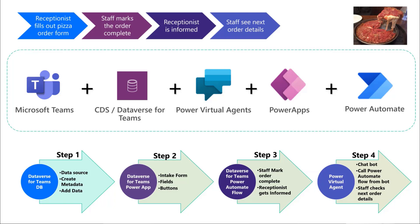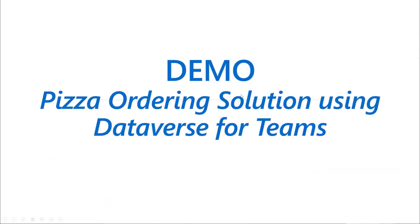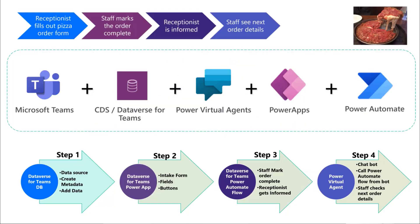Step three is making a Power Automate flow to mark an order as complete, so we can inform the receptionist who might be in a different location. They want to be notified via chat or a message. Then lastly, if we have time, we'll show a chatbot where the staff or the chef can ask the bot what's the next order. It'll tell them. Hopefully you like these little pictures - it's going to make you really hungry.